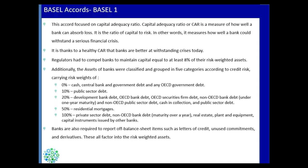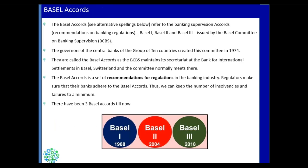Banks are also required to report off-balance sheet items, such as letters of credit that have been issued, any commitments already made but still unused, or any kind of derivatives. All of these risk-weighted assets were factored into Basel 1, which was in place from 1988 through the early 2000s.